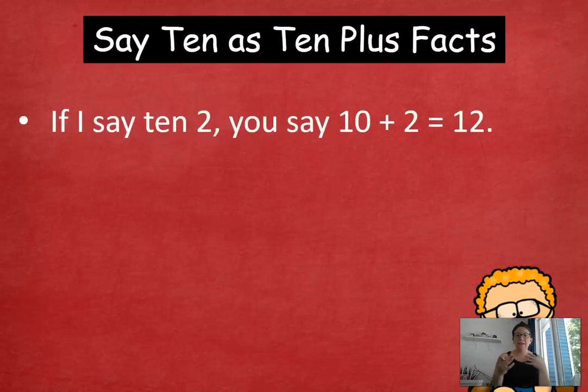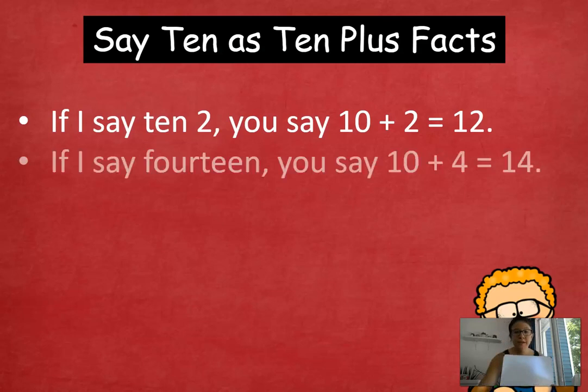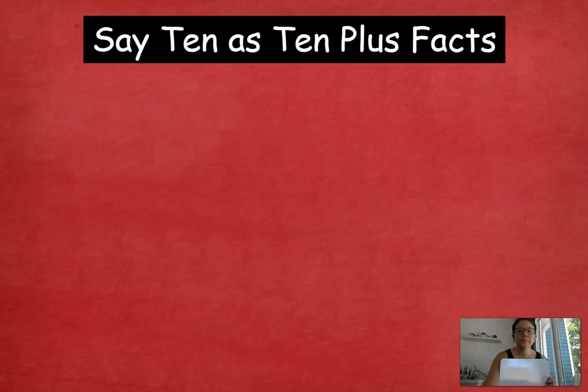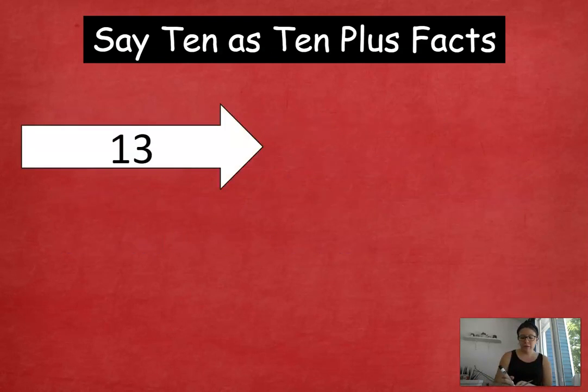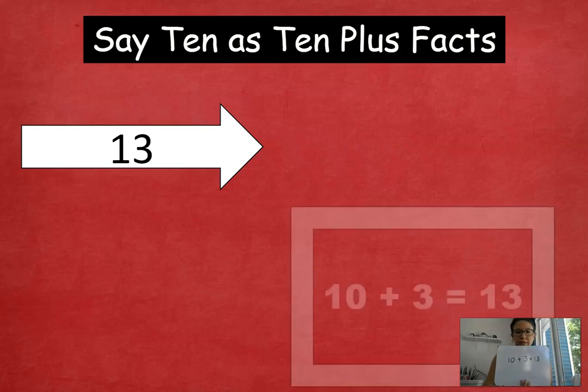Now, this time, I'm going to give you a number. It might be in the say 10 way, or it might be just a number like 12. And you are going to take your whiteboard, and you are going to write that number using the 10 plus number sentence. For example, if I say 10, 2, you're going to say 10 plus 2 equals 12. If I say 14, you're going to say 10 plus 4 equals 14. You're going to write that on your whiteboard, or your paper. So, first one, 13. I'm going to start with 10 plus how many ones equals 13.